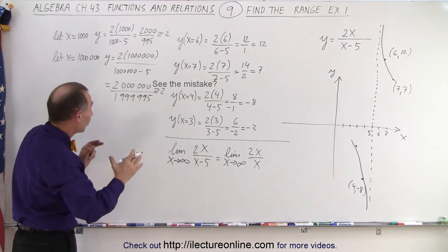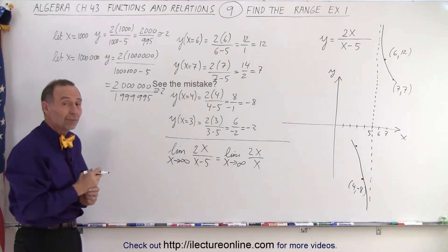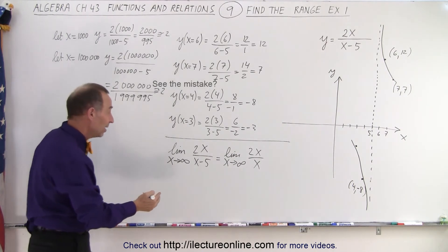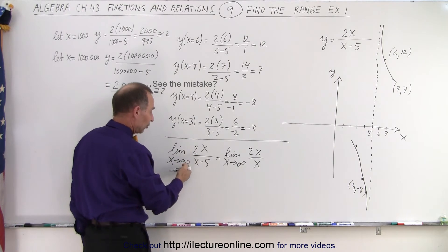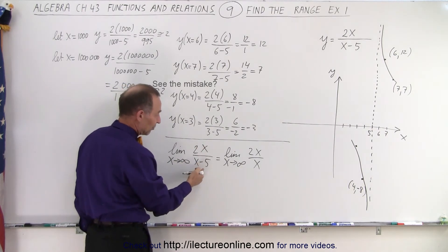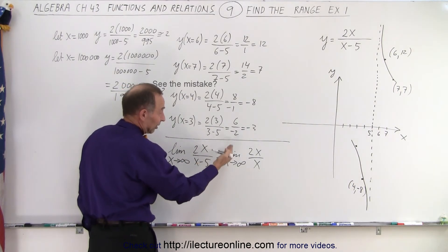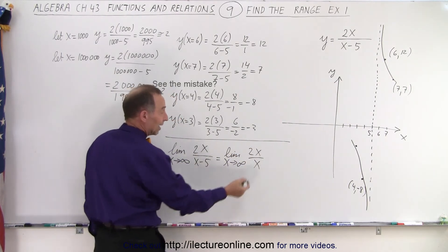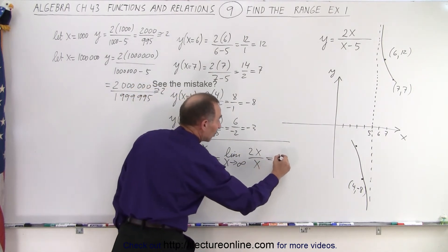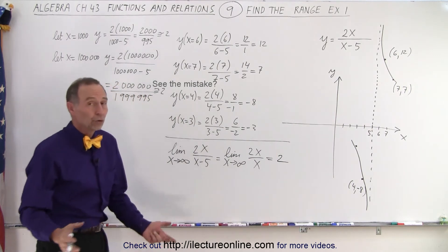The bigger x becomes, the closer that fraction becomes equal to 2. So essentially, when we write the limit as x goes to infinity of 2x over x minus 5, we can say that's equal to the limit of x going to infinity of 2x divided by x, and then the x's cancel, and then we realize in the limit that's equal to 2.